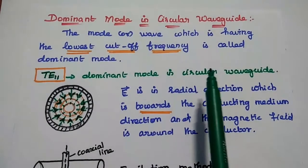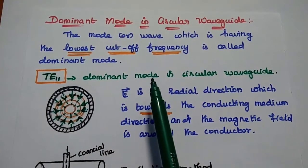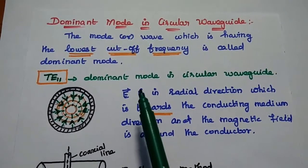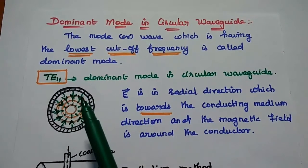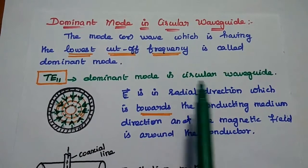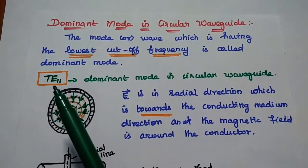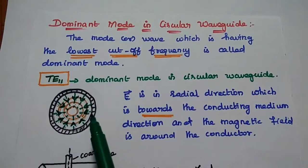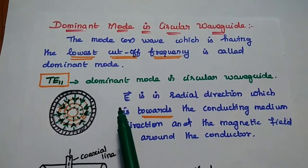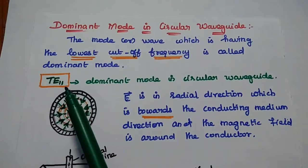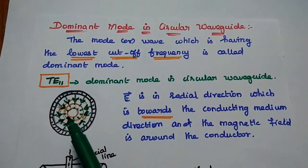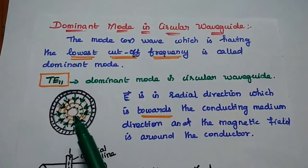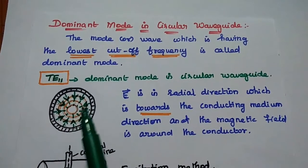Next, the dominant mode in circular waveguide. The mode or wave which has the lowest cutoff frequency is called the dominant mode. For transverse electric waves, TE11 is the dominant mode in circular waveguide, as it has the lowest cutoff frequency. In the TE11 wave, the electric field is in the radial direction and towards the conducting medium, while the magnetic field is around the conductor. This is the structure of the TE11 mode.